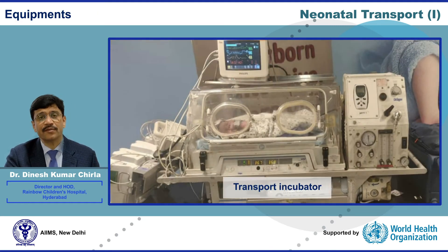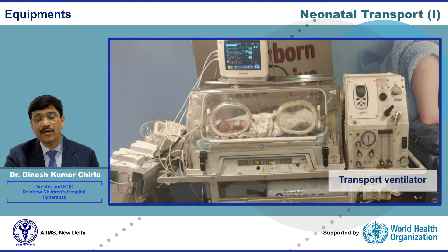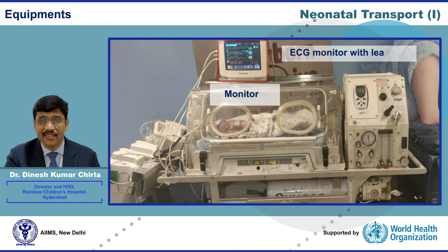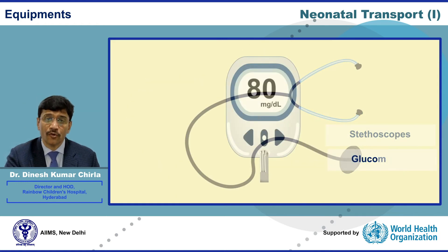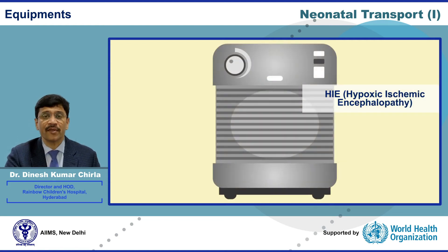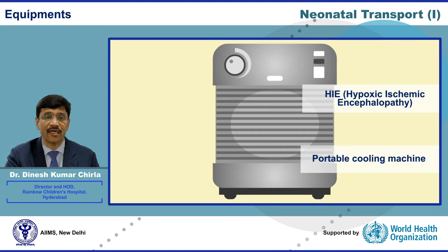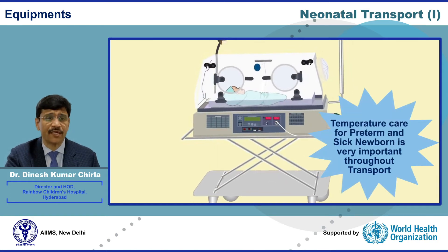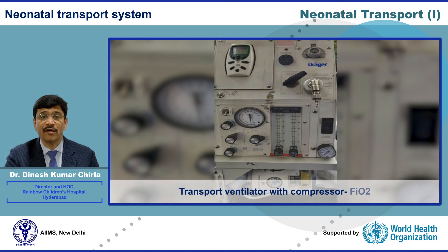Regarding equipment: a transport incubator is an important component. A transport ventilator and monitor — including ECG, SpO2 monitor, thermometer, non-invasive blood pressure monitor, stethoscope, glucometer, and handheld ABG machine — are essential. For hypoxic ischemic encephalopathy (HIE), since cooling must be started within six hours, there is a need to also have portable cooling devices so that cooling can be initiated during transport. Temperature care for preterm and sick neonates is very important throughout transport.